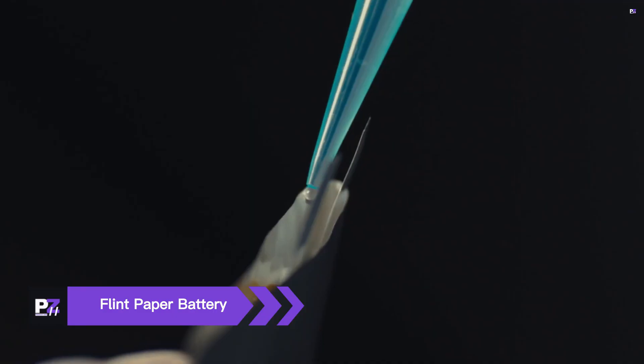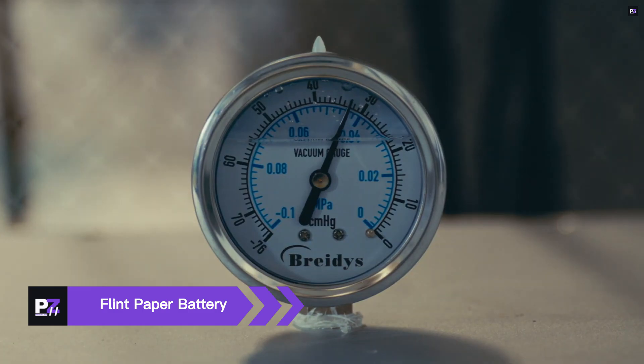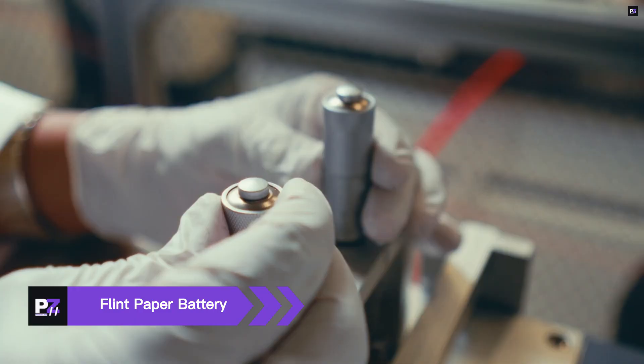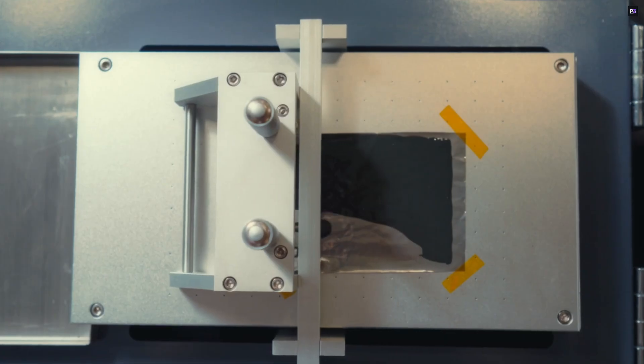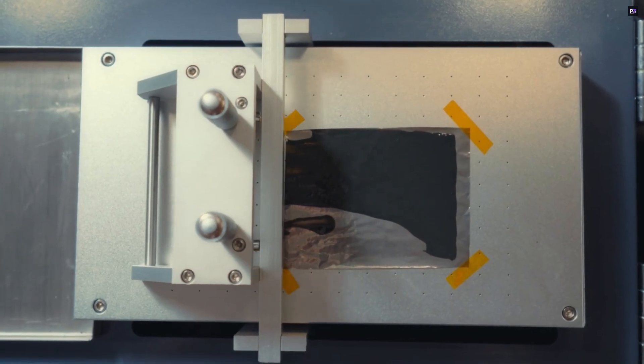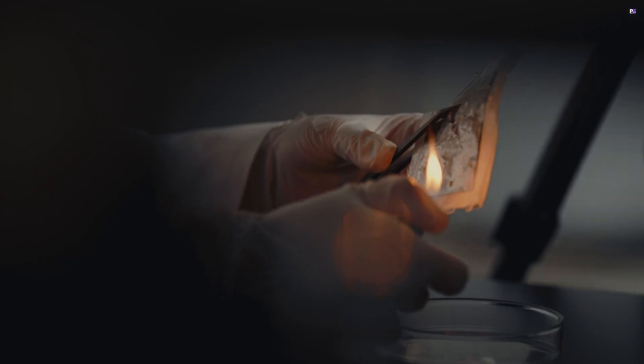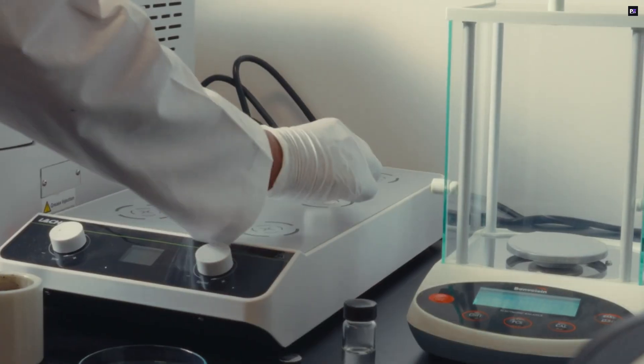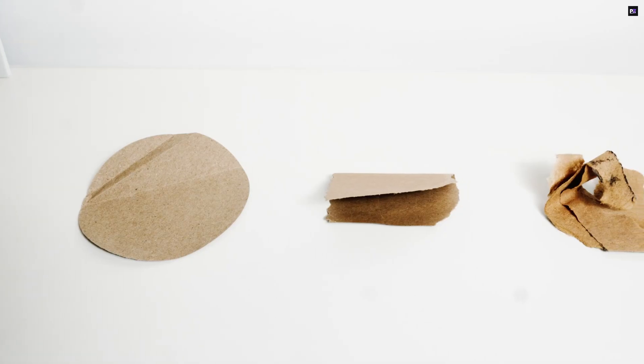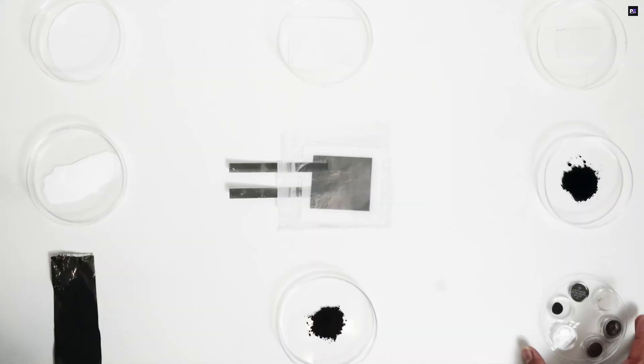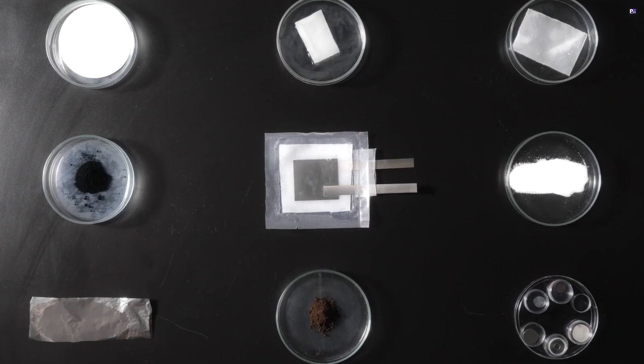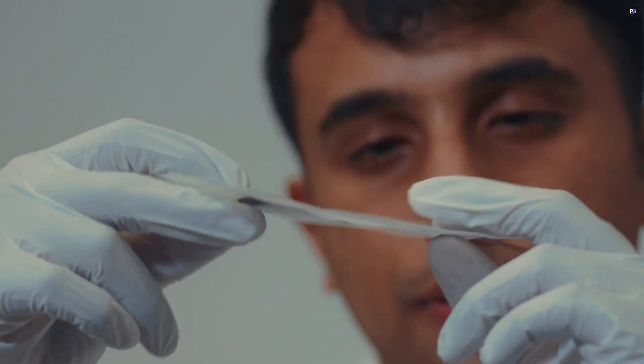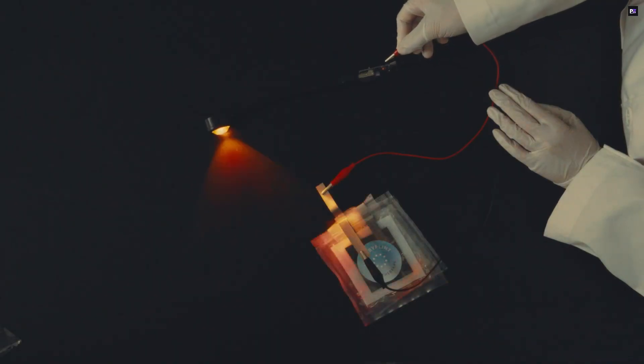The Flint paper battery represents a major leap forward in developing truly safe and eco-friendly energy storage. Unlike traditional batteries that frequently use toxic and flammable components, this innovative power source is crafted from surprisingly simple, sustainable materials. Imagine a battery made from biodegradable cellulose paper, zinc, and manganese, combined with a water-based electrolyte and a hydrogel separator. It's a testament to smart green engineering.